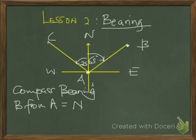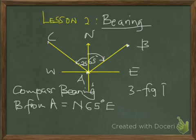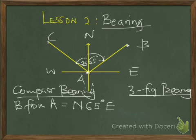The bearing of B from A can be expressed as a compass bearing: North 65 degrees East. Using a 3-figure bearing, this equals 065 degrees, which makes it a 3-figure bearing.